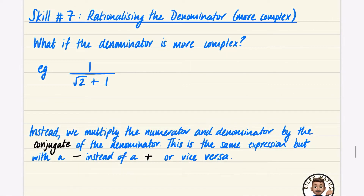In this video we're going to learn about rationalizing the denominator but with more complex kinds of denominators. What if the denominator has a root and an integer — we don't want it to be irrational anymore, we want it to become a rational number. What could we multiply the top and bottom of this fraction by that would make it have a rational denominator?